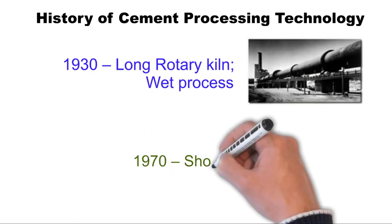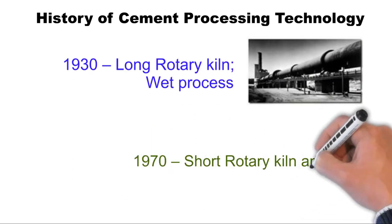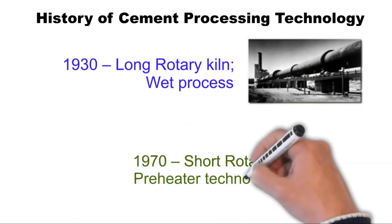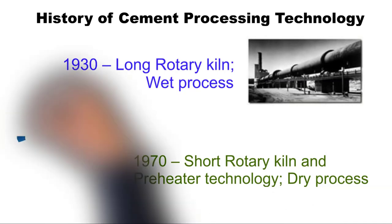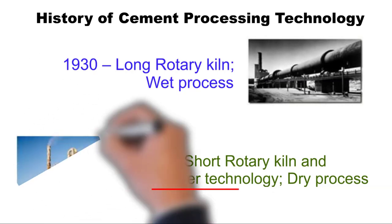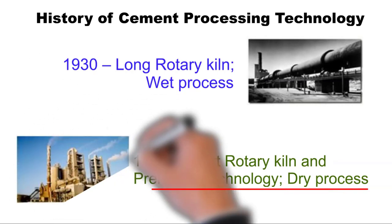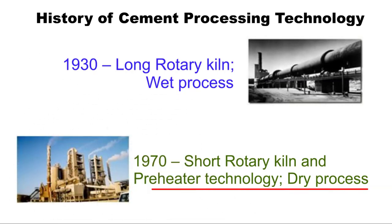In the 1970s, the first short rotary kilns were used with a preheater and pre-calciner as a concept, using dry process technology. Most of the wet process technologies are energy-consuming, whereas the modern dry process technology is the most energy-efficient process.